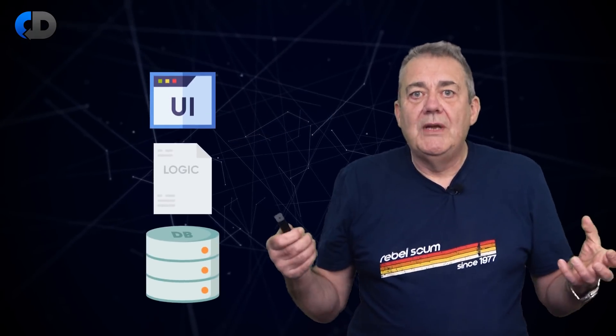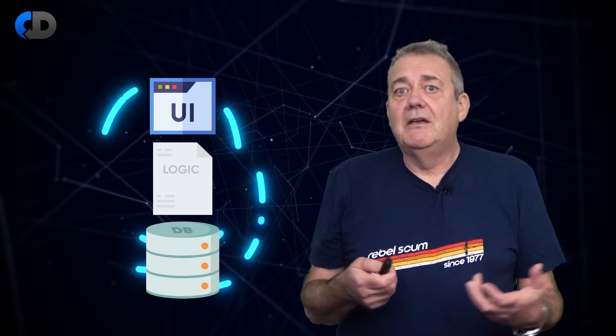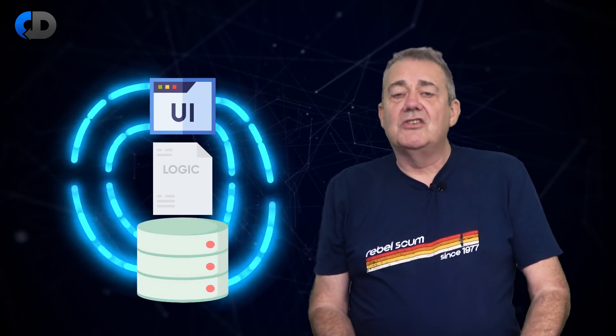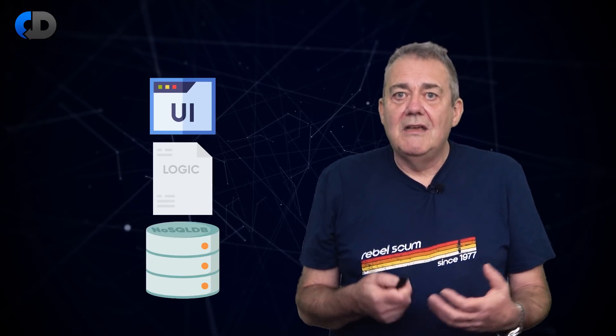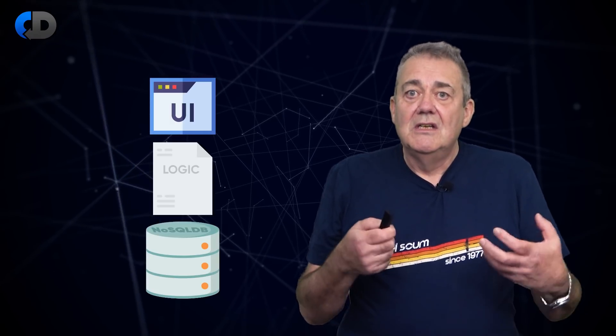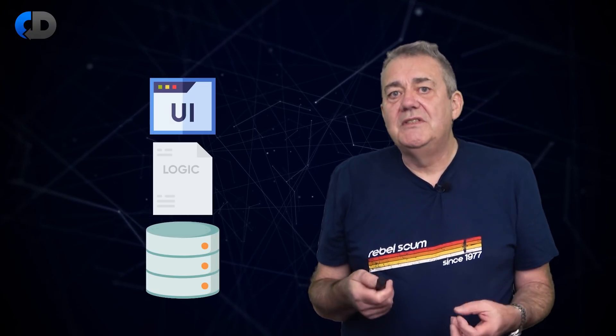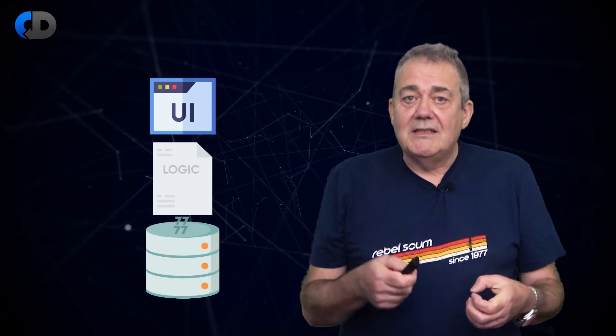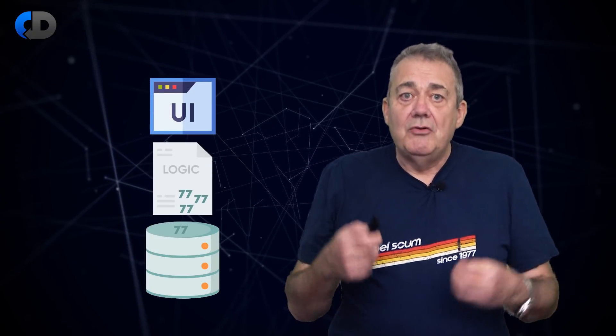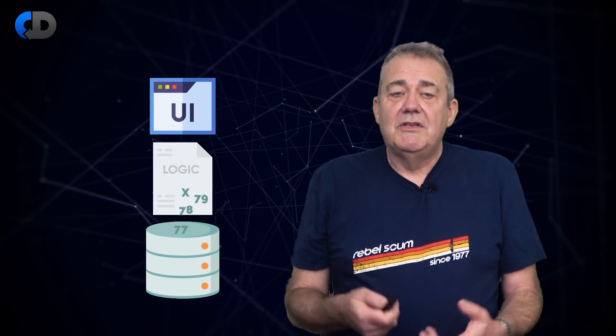However, as the web grew in influence and massive-scale computing became more common, having a relational database management system as a synchronization point to your data — a source of truth — simply didn't scale. So people started experimenting with other approaches. I was once asked to consult on a huge project. They had decided to use a NoSQL database as their primary data store, which is fine, but they'd forgotten or didn't realise the importance of the protection that transactions had given them. This NoSQL database wasn't transactional, so data was shared and written to by multiple processes, and the results were essentially random.